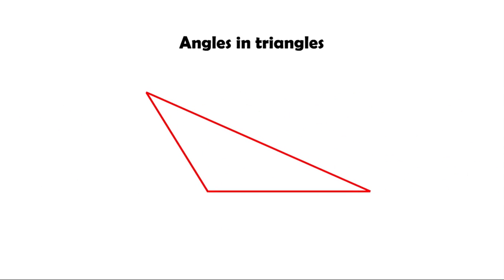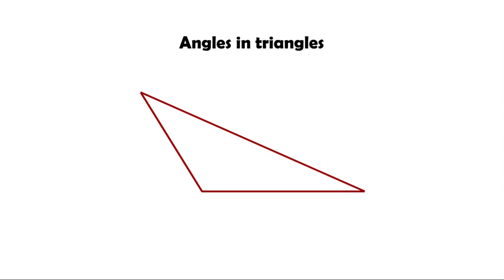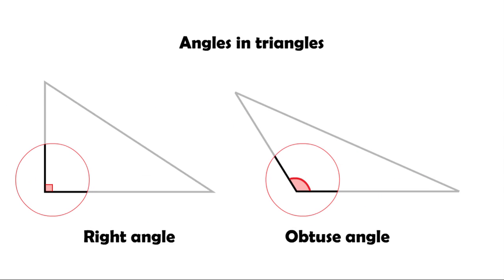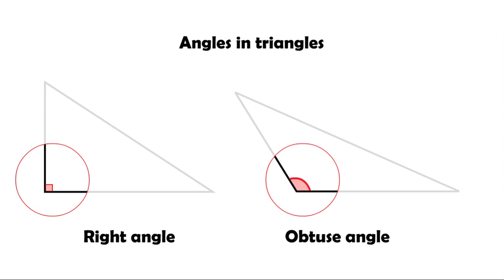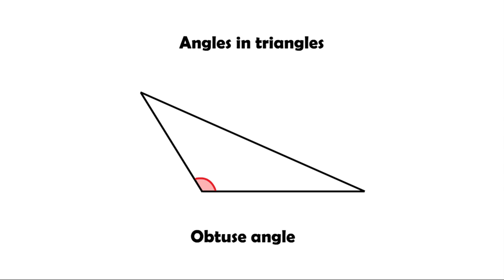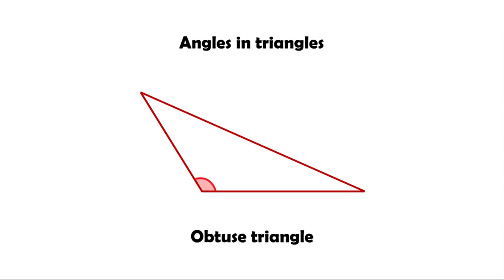Here's another triangle. As you can see, in this one we have an obtuse angle, which is larger than the right angle. If a triangle has an obtuse angle, then we call it an obtuse triangle.